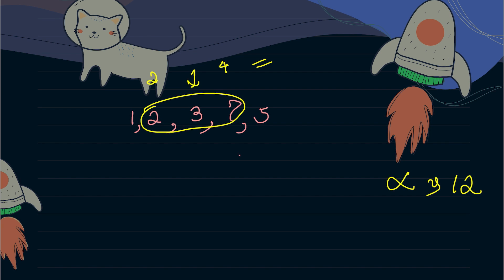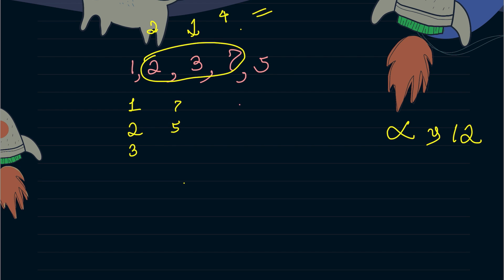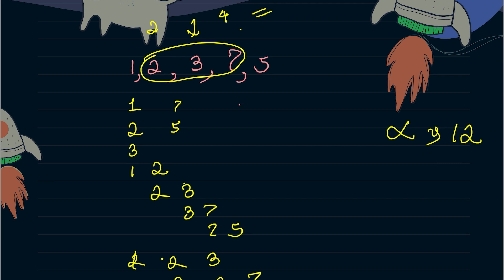The very first approach to give your interviewer is finding all possible subarrays and returning the first one that sums to x. For example: 1, 2, 3, 4, 5; then two-element subarrays like 1,2; 2,3; 3,7; 7,5; then three-element subarrays like 1,2,3 and 2,3,7. The interviewer would then tell you to optimize it.